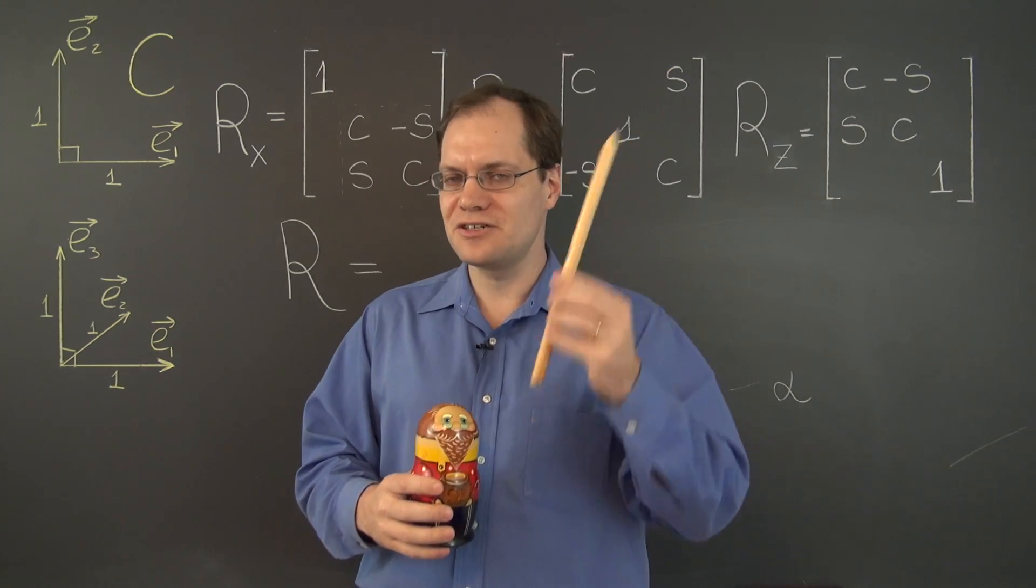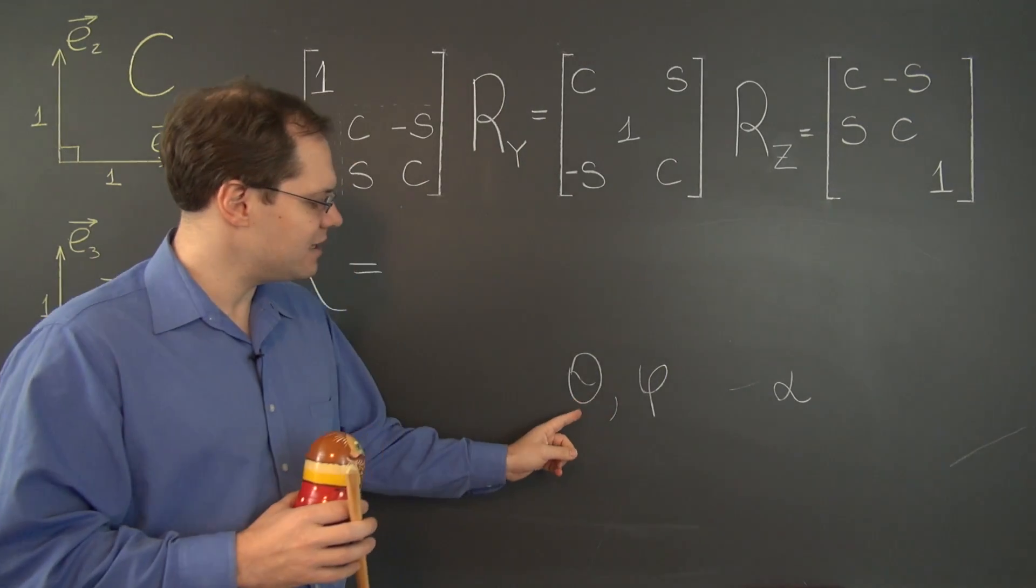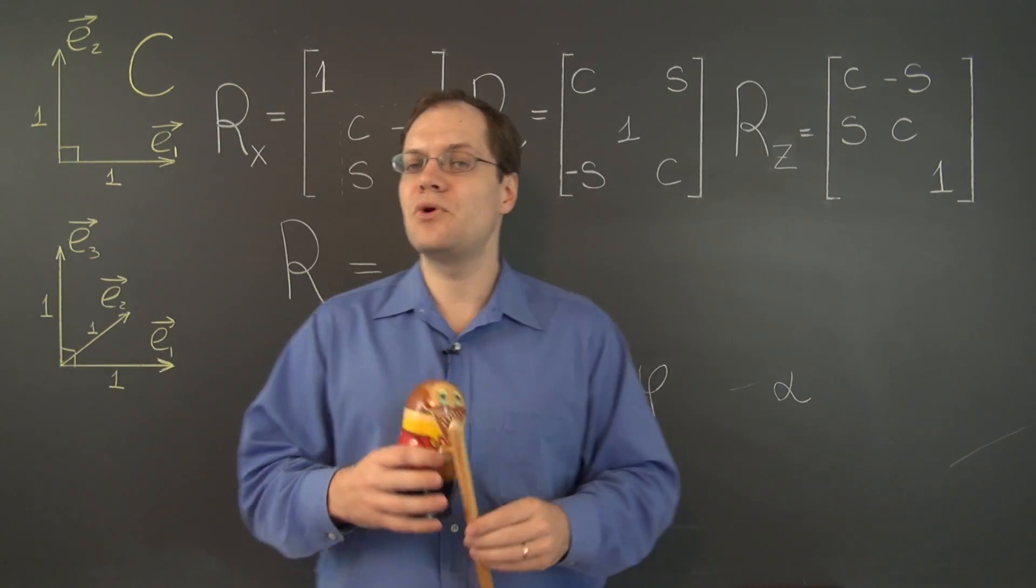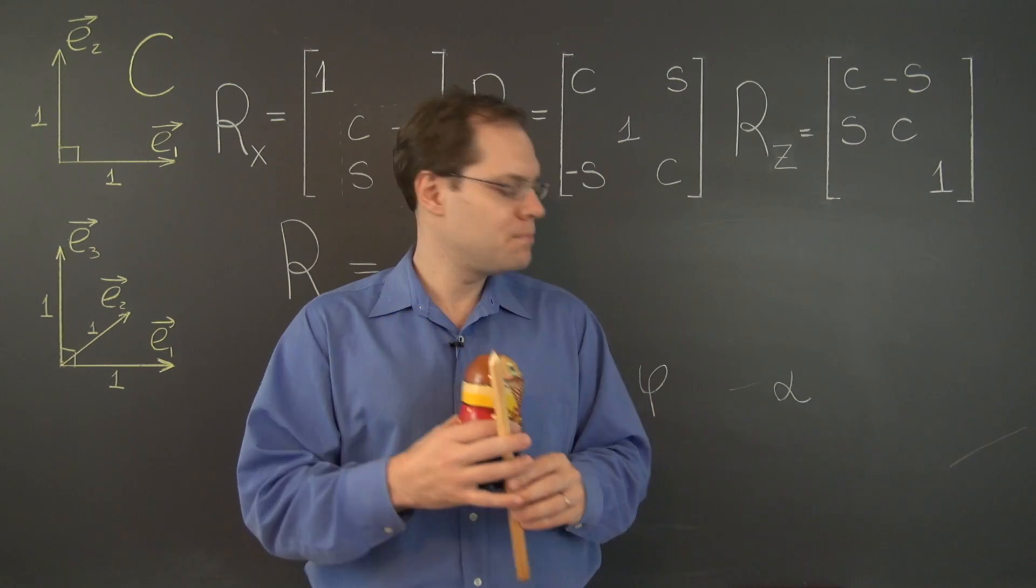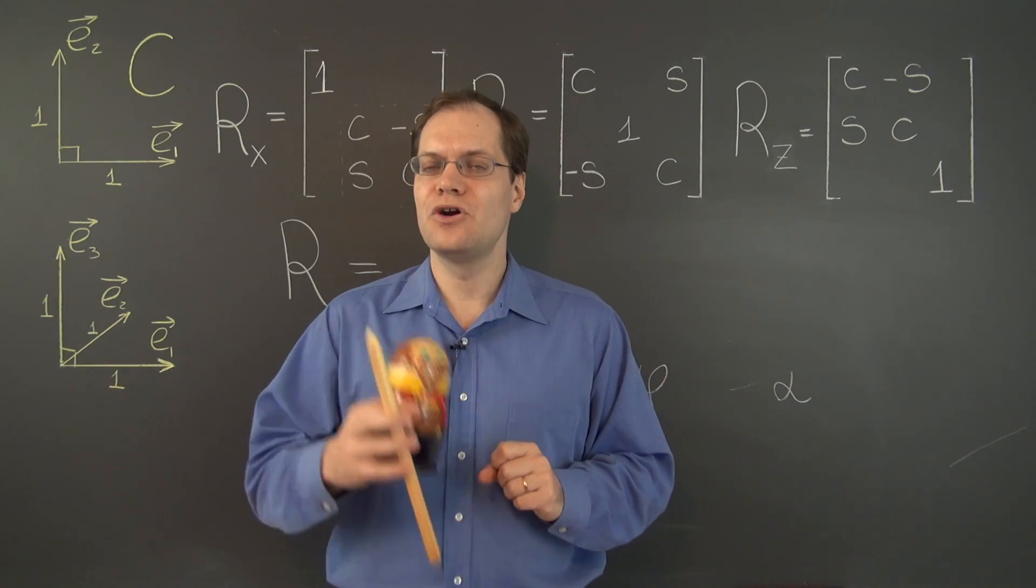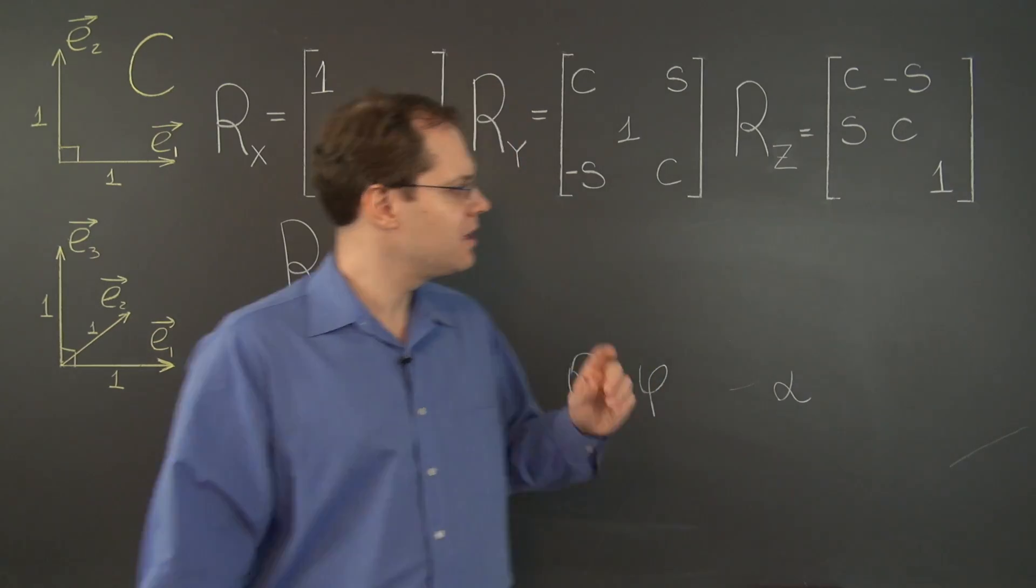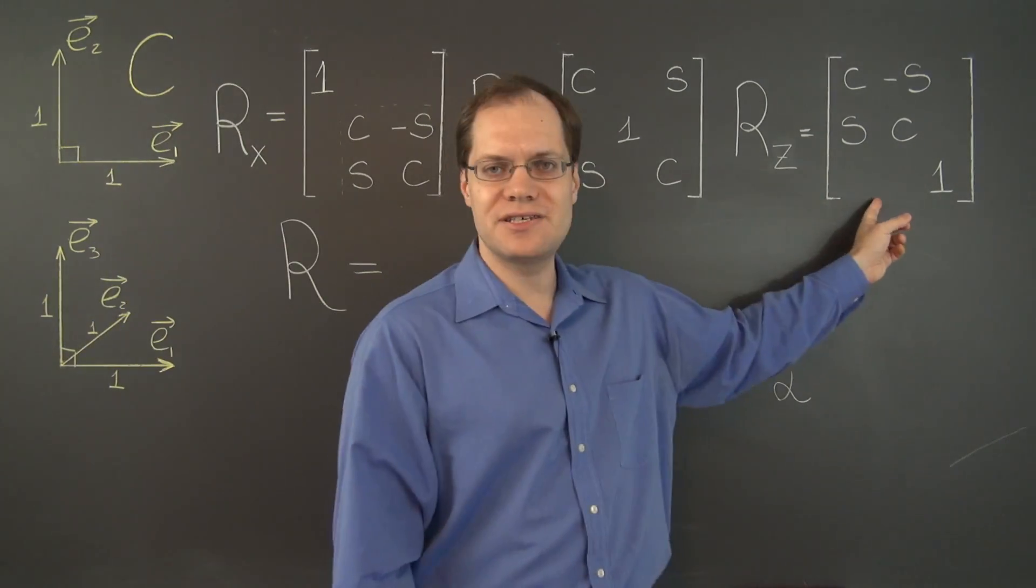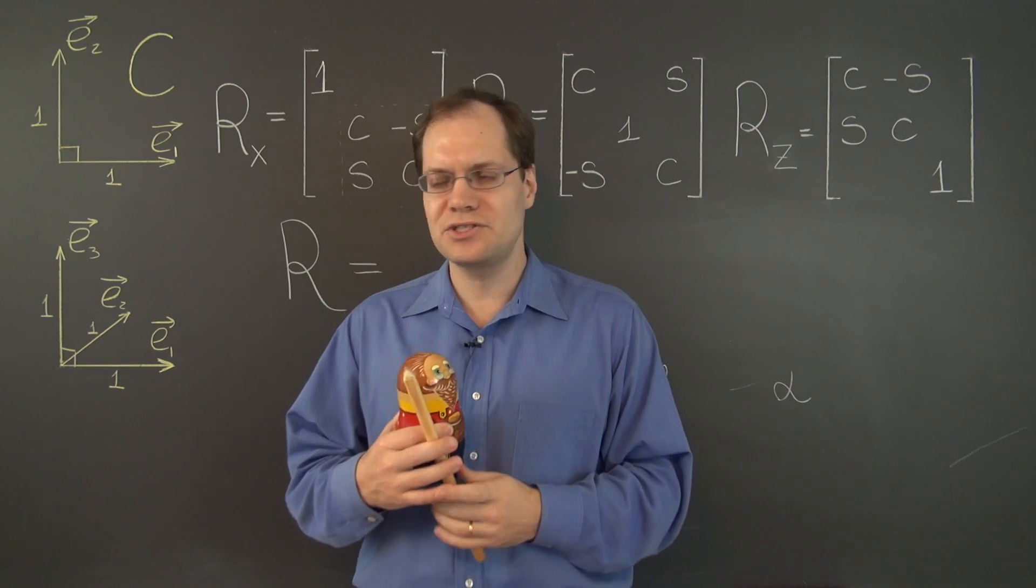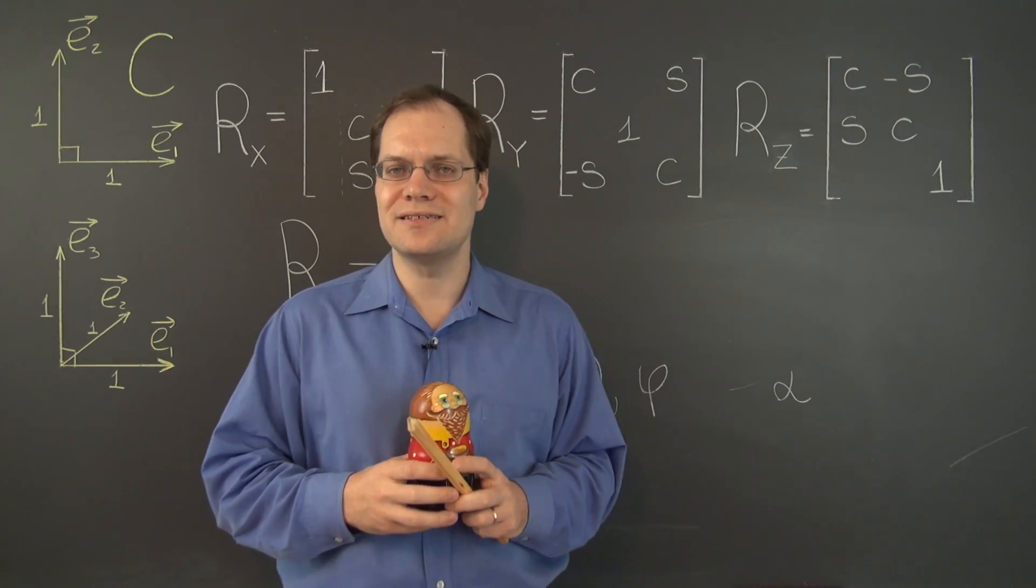Suppose that the direction of the axis is given by the angles theta and phi, and that we want to rotate the body by the angle alpha. Furthermore, we want to represent this simple rotation as a product of these matrices that represent the elementary rotations with respect to the coordinate axes.